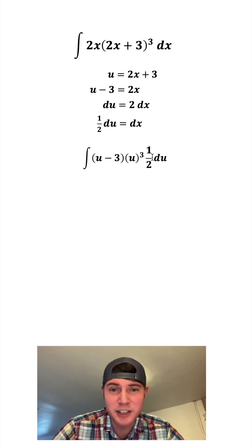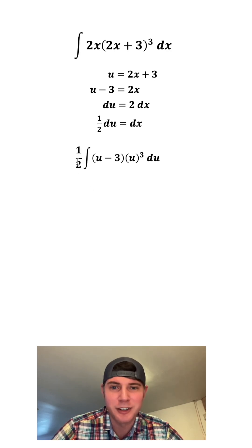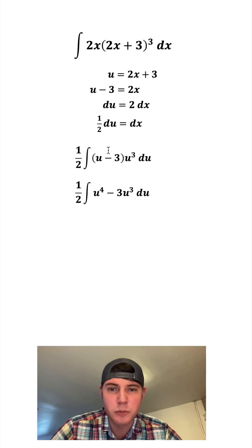This 1 half is a multiplicative constant, so we can pull it to the front of the integral. We can distribute this u cubed. u cubed times u, which is u to the 4th, and u cubed times negative 3, which is negative 3u cubed.